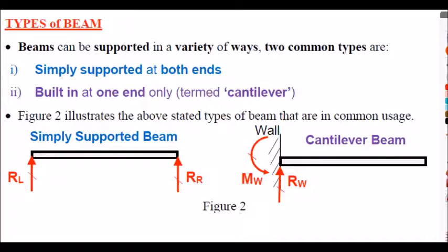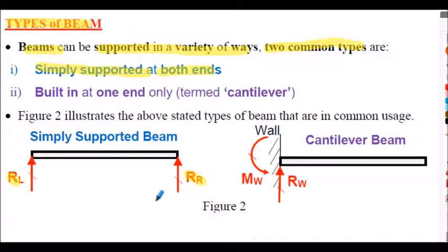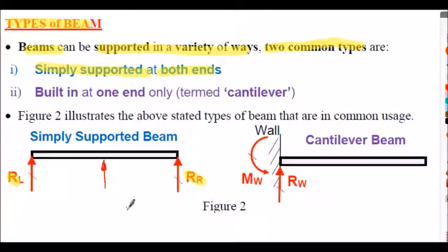Beams can be supported in a variety of ways. The first common type is a simply supported beam at both ends, with reactions RL and RR. These supports can be anywhere along the beam — they don't have to be at the ends. If you add a third support, the analysis becomes incredibly complex. So everything we analyse here will just have two supports along the beam.